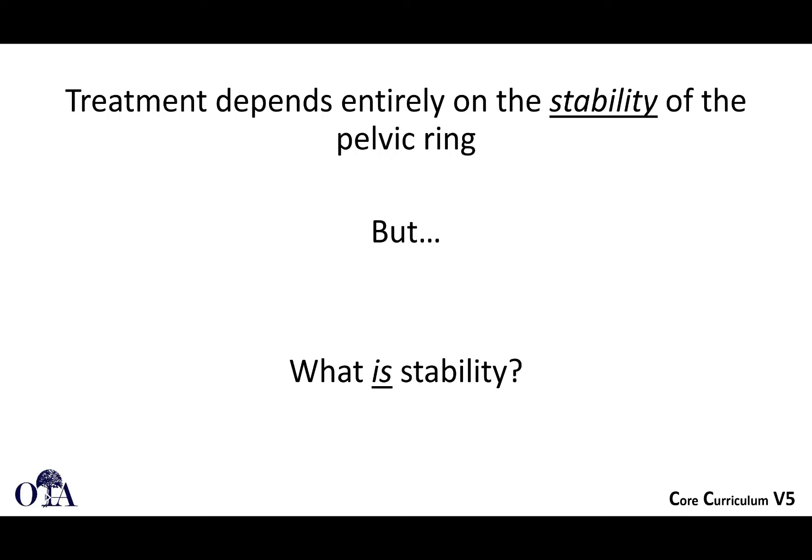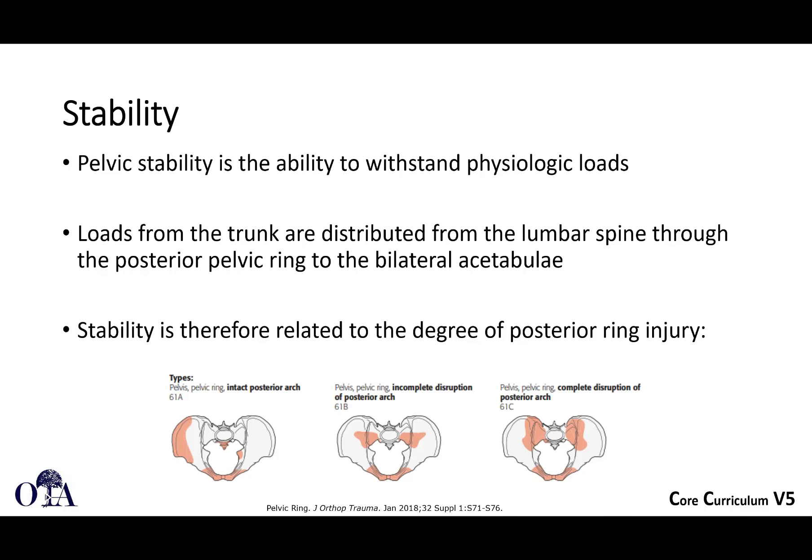Treatment depends entirely on the stability of the pelvic ring. We talked about hemodynamic stability in the acute management lecture, but here we focus on mechanical stability. Pelvic stability is the ability to withstand physiologic loads. Loads from the trunk are distributed from the lumbar spine through the posterior pelvic ring to bilateral acetabulae. Stability is therefore related to the degree of posterior ring injury, because that is what links the lower extremities to the axial skeleton.